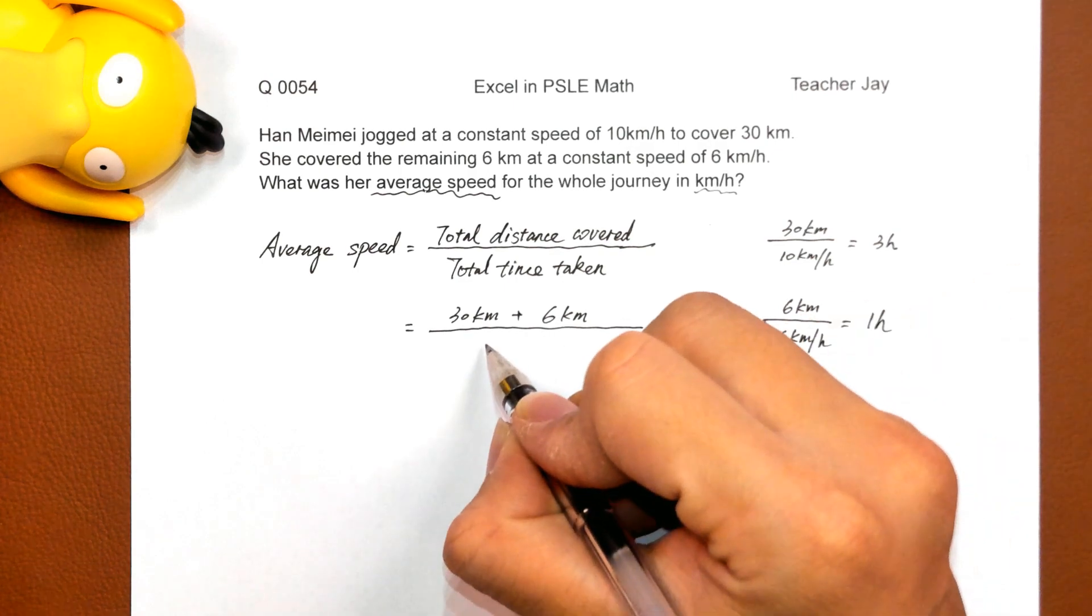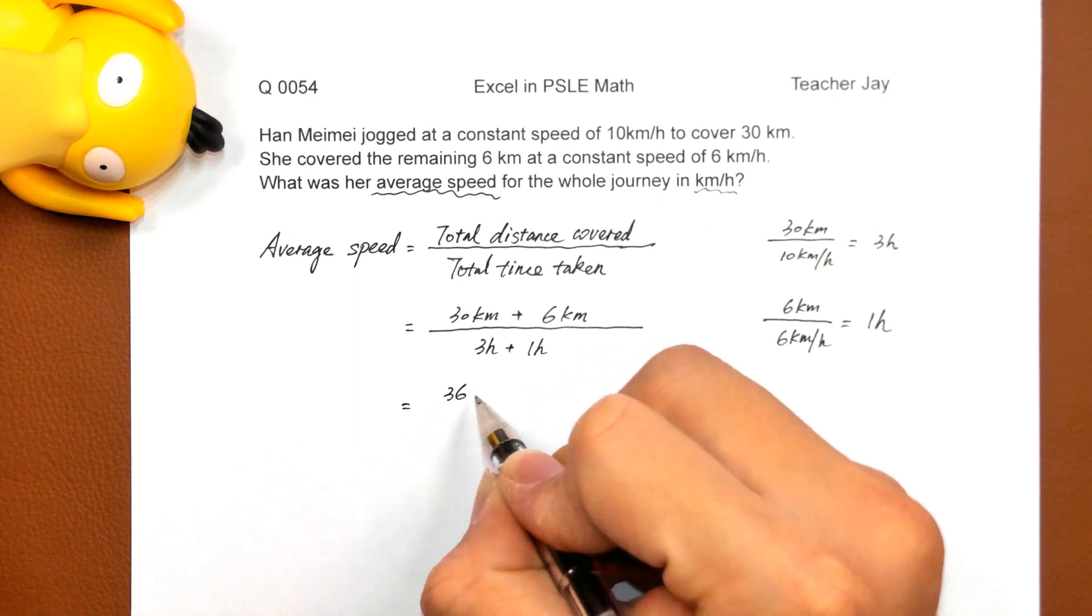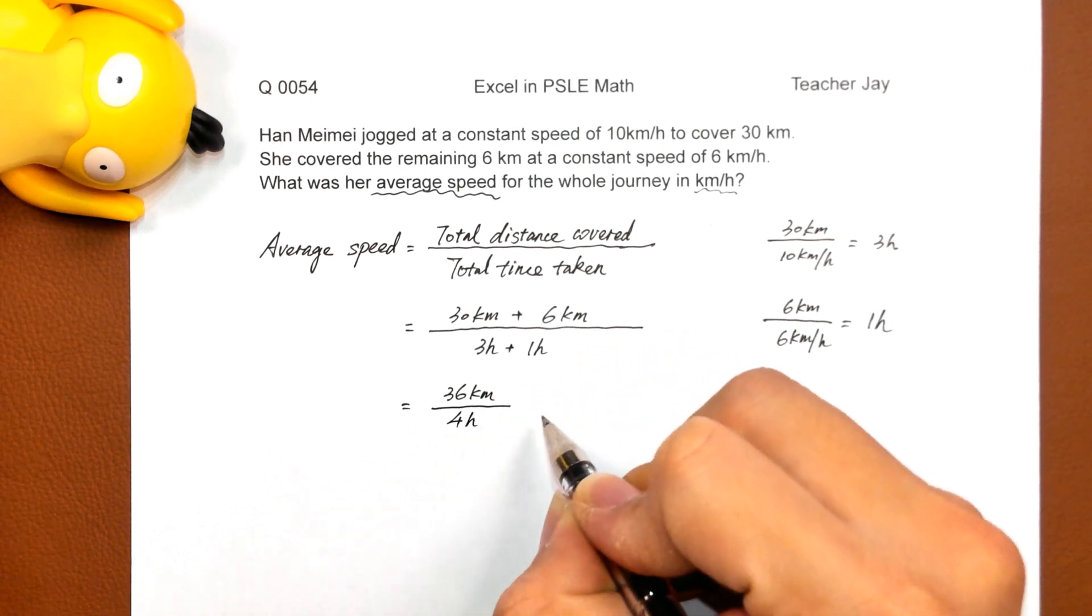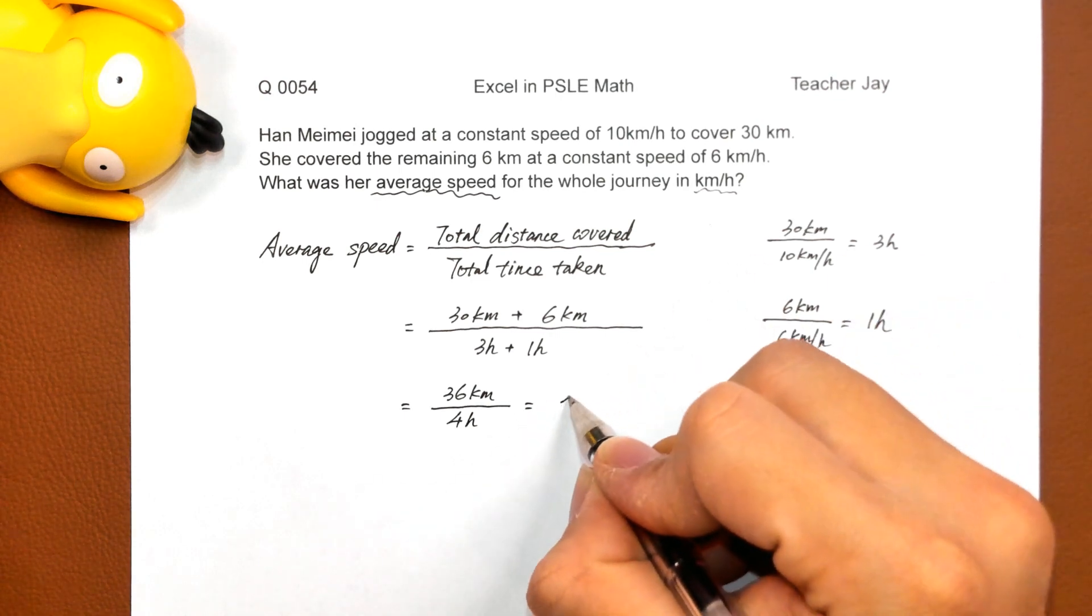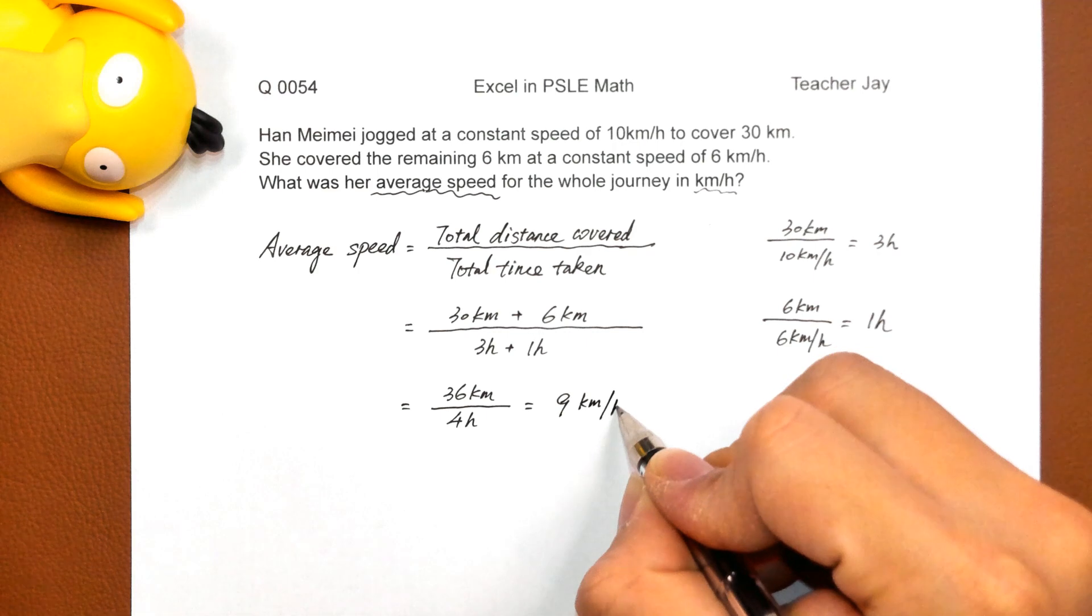So, 这便是three hours plus one hour, 36 kilometers divided by four hours, nine kilometers per hour.